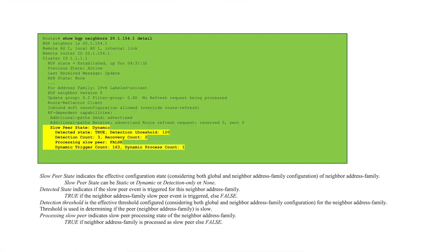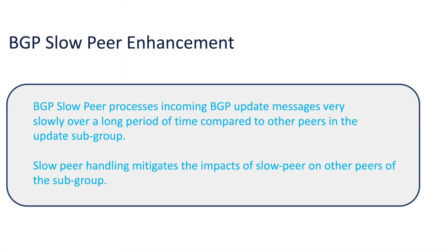The next feature is related to BGP — BGP slow peer. This feature allows customers to detect a BGP slow peer in their network. A slow peer is a peer that is processing incoming BGP update messages very slowly over a long period of time as compared to other peers. Slow peer handling mitigates the impacts of a slow peer on other peers of the subgroup.